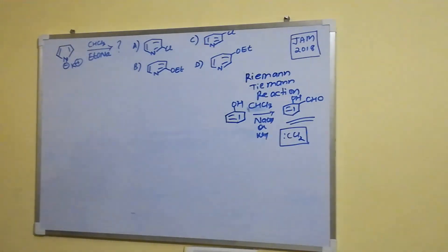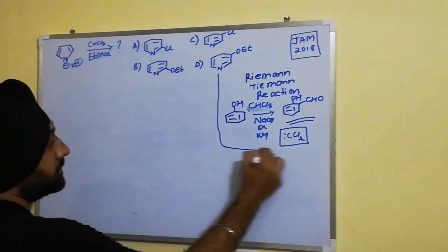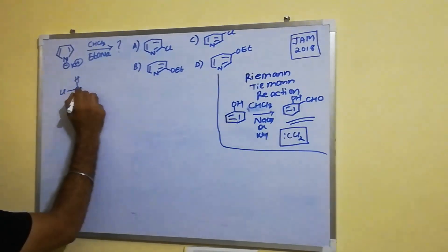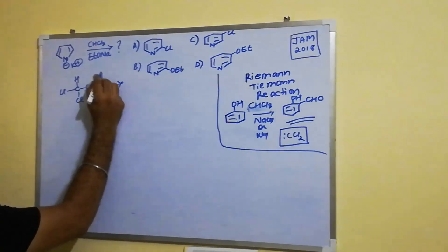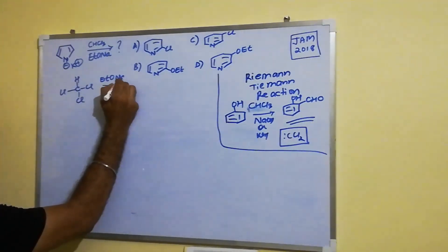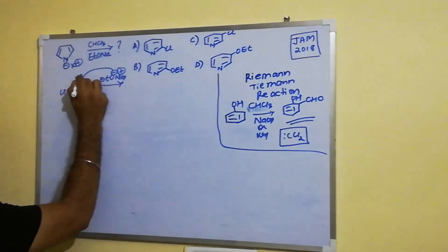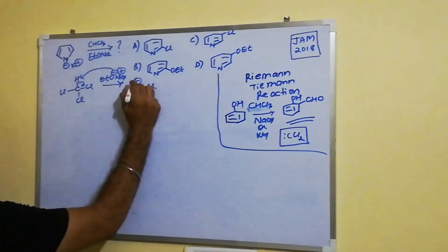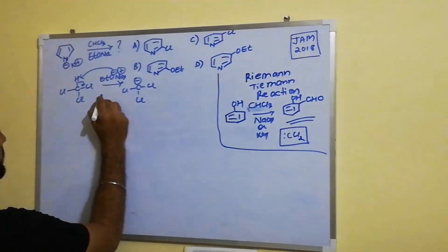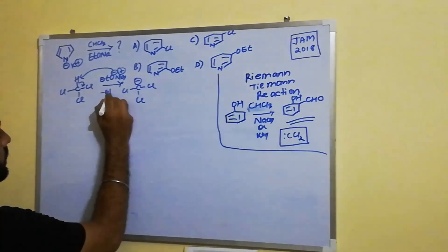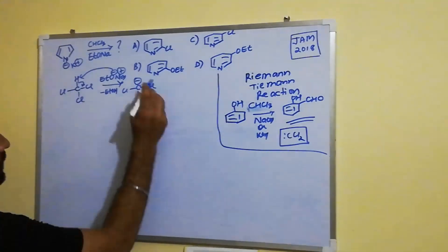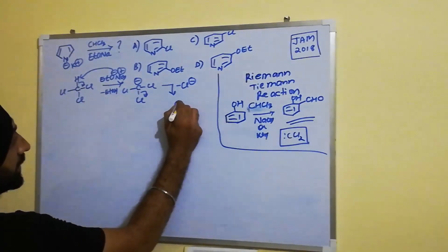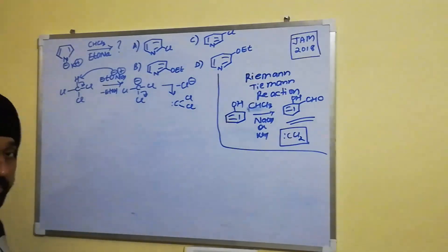So as I said, the first step of the reaction would be the abstraction of hydrogen by this base which is sodium ethoxide. It leads to the formation of this particular derivative, and then dechlorination leads to the formation of this dichlorocarbene intermediate.